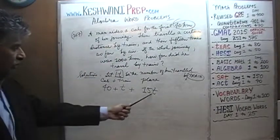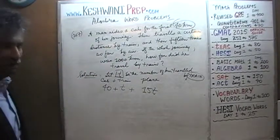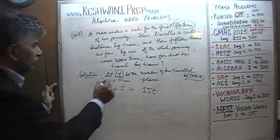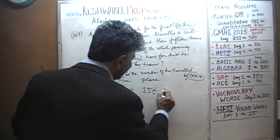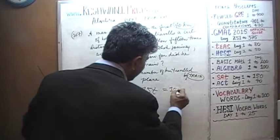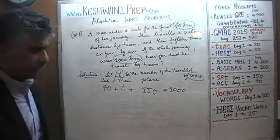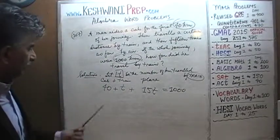All three quantities must add up to his total journey. His total journey, we're told, is 1000 kilometers. That's how straightforward it is.